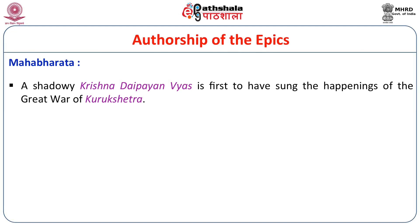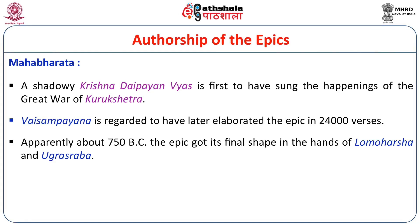Regarding authorship, Mahabharata is the great epic and Ramayana is known as the little epic. Tradition holds that Krishna Dvaipayan Vyasa was the first person to have sung the happenings of the great war of Kurukshetra. Later it was composed in the hands of Lomaharsana and Ugrasravas. It began with 8,000 shlokas and grew to one lakh. Around 750 BCE the epic got its final shape in the hands of Lomaharsana and Ugrasravas.